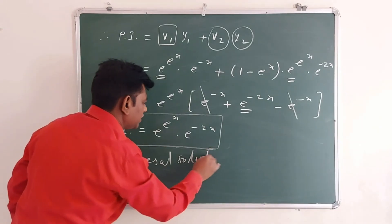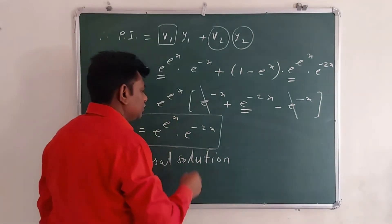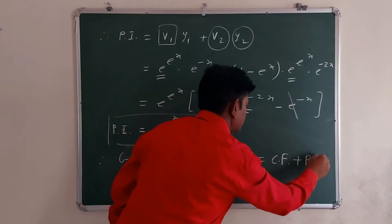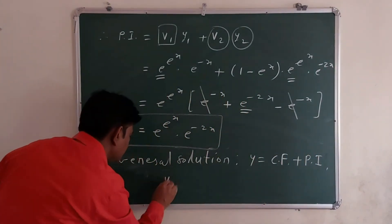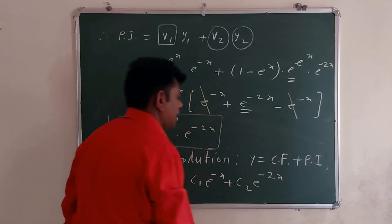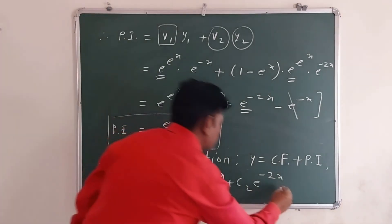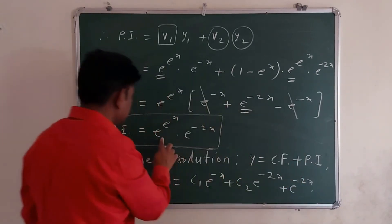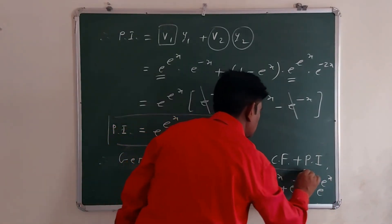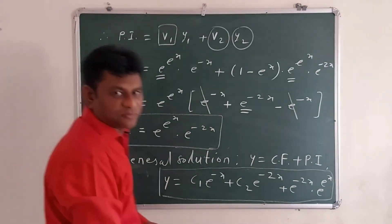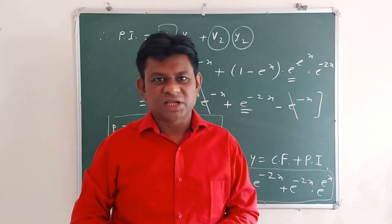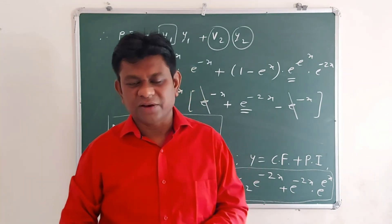The general solution of the given differential equation is y = CF + PI = c1·e^(-x) + c2·e^(-2x) + e^(-2x)·e^(e^x). This is the complete general solution. Hope all of you have understood this problem. Please subscribe the channel and let me know your comments and feedback. Thank you.